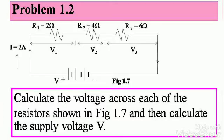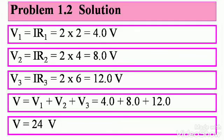Problem 1.2. Calculate the voltage across each of the resistors shown in figure 1.7 and then calculate the supply voltage V. Note down the figure. There is a supply voltage V. There are separate voltage drops across each resistor because it is a series circuit. So those are V1, V2 and V3 respectively for R1, R2 and R3, and the current is 2 amperes.